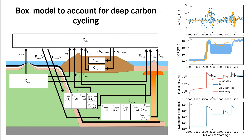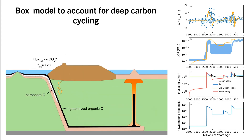Now I want to share some results from a box model we developed to account for these behaviors of carbon in the mantle. I won't go into too much detail on all the fluxes and reservoirs, but I will outline some of the important assumptions. The carbonate burial flux is controlled by the equation k times CO2 to the nth power, where k is a variable which accounts for how weatherable the continents are and CO2 is the amount of CO2 in the atmosphere. F-ORG is always kept at 0.2 throughout the model and atmospheric oxygen is proportional to the amount of organic carbon in all reservoirs.